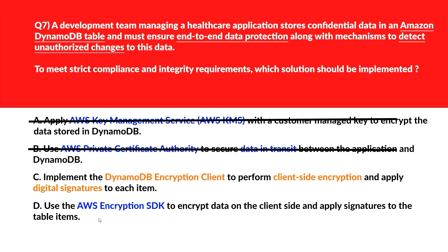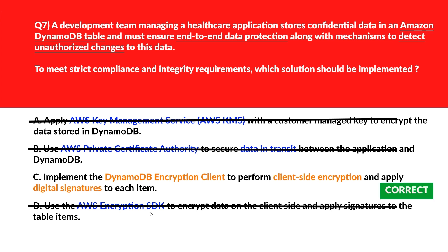Option D says: use the AWS Encryption SDK to encrypt data on the client side and apply signatures to the table items. The AWS Encryption SDK is not optimized for DynamoDB and lacks built-in support for table item structure and attribute-level control. Wrong answer. Option C is the right answer.